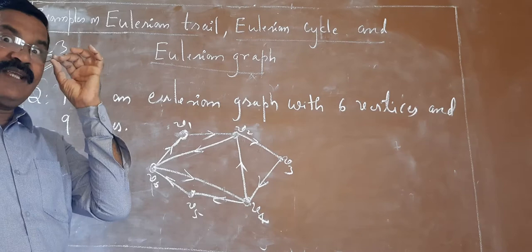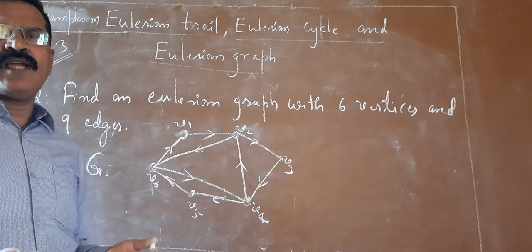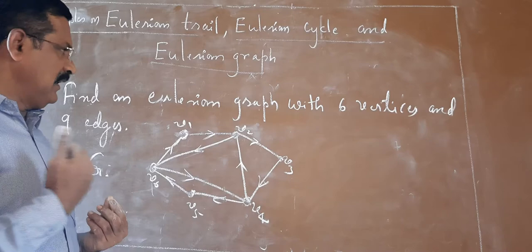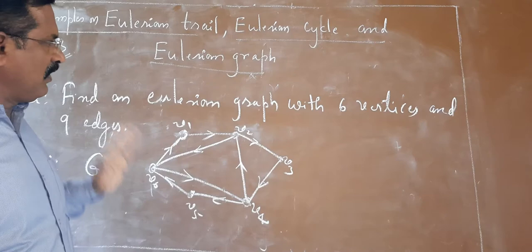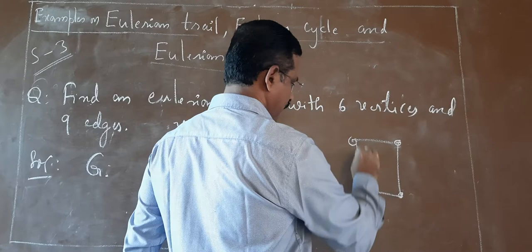In the next class, we are going to discuss one very important characterization. A characterization means a graph theorist can tell just by observation — if you think in a proper way, you may be able to get a characterization. We have considered so many examples on Eulerian graphs. If you observe properly the degree of every vertex — as I said previously — this is one example of an Eulerian graph.